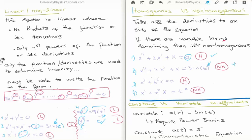Equation three, with all x terms taken to the left, sets equal to zero — it's a homogeneous equation. Equation four is non-homogeneous, not because of the coefficient term, but because the t² on the right-hand side remains — that makes it a non-homogeneous equation.